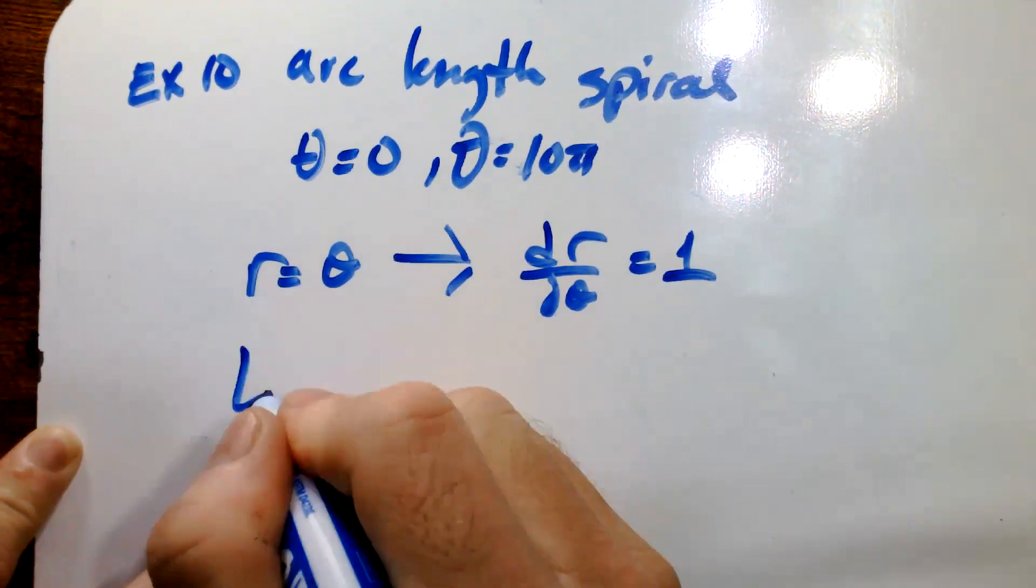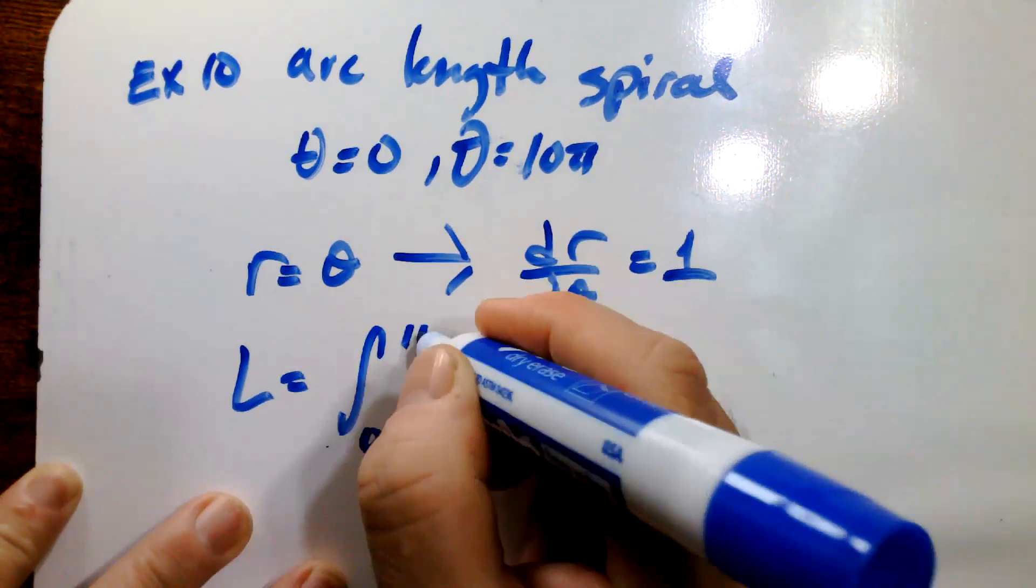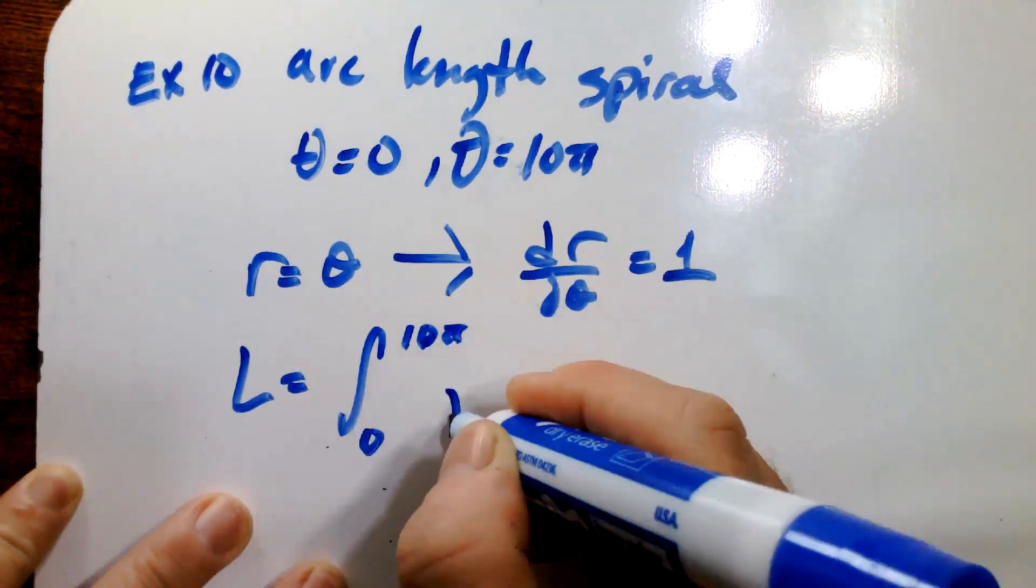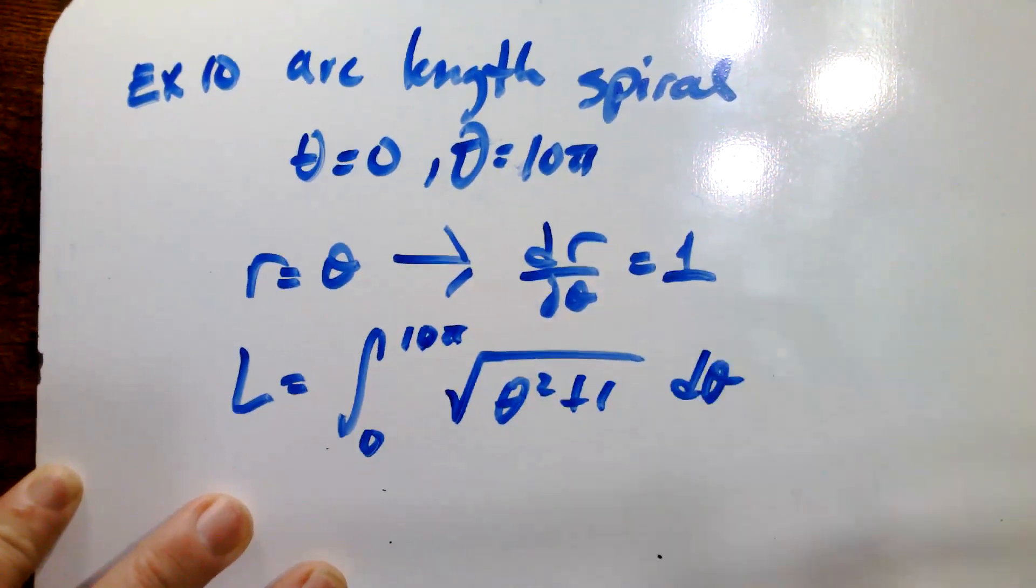So the arc length L is going to be equal to the integral from zero to 10π of the square root of theta squared plus one dθ.